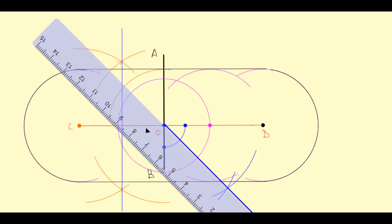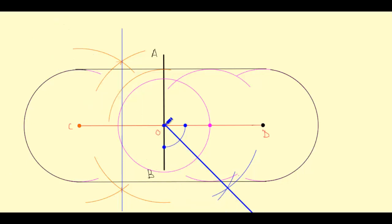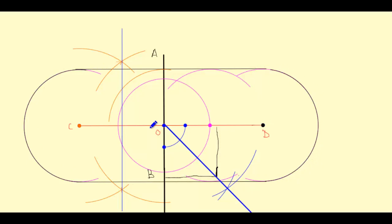This is the angle bisector of lines OD and OB. To summarize: the first locus was the circle, equidistant from fixed point O; the second was parallel lines, equidistant from line CD; the third was the perpendicular bisector, equidistant from two points C and O; and the fourth was the angle bisector, equidistant from two intersecting lines OD and OB.